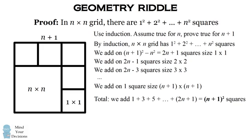So the total number of squares we can add on is the sum of the odd numbers up to 2n+1 and that's a well-known formula of (n+1)². So we've added on a total number of (n+1)² number of squares. So in total in an (n+1) × (n+1) grid, we have the same formula plus (n+1)² and that completes the induction.